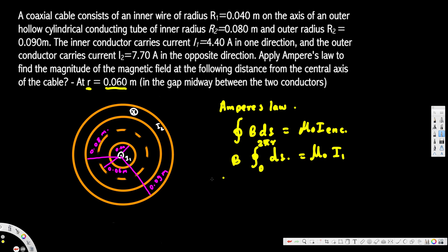Let's do the integration. This becomes B times 2πr because s goes from 0 to 2πr. So B times 2πr equals μ₀ I₁. We're solving for B, so B equals μ₀ I₁ divided by 2πr.